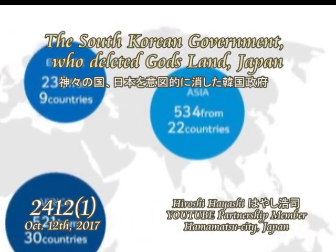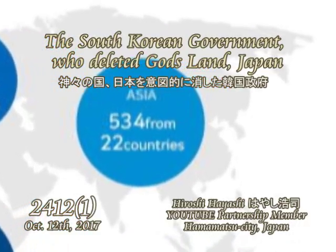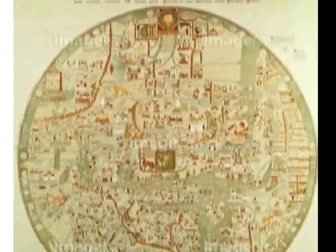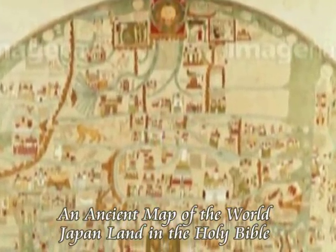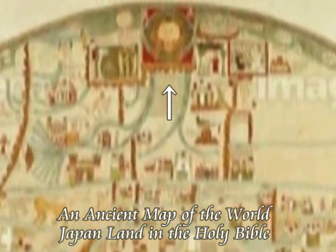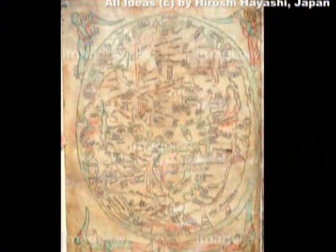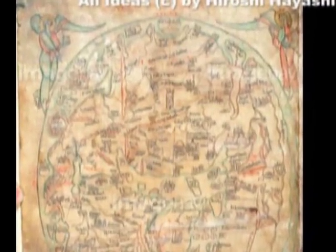The South Korean government intentionally deleted Japan from the official map of the world at the Pyeongchang Olympic Winter Games 2018, as has been widely pointed out throughout Japan. You see no Japan in their map, although on the contrary, you see Japan in the ancient maps of the Old Testament or the Holy Bible.